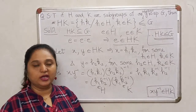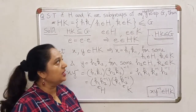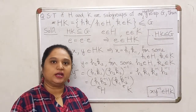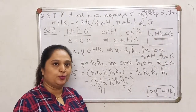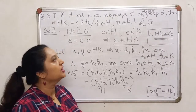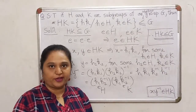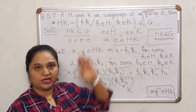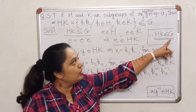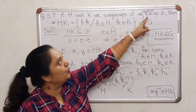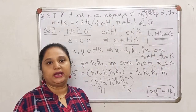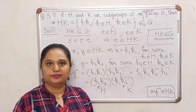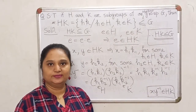So in this lecture today, we have seen two interesting ways of constructing new subgroups from existing subgroups. We saw that if H and K are two subgroups, then H ∩ K becomes a subgroup, and HK also becomes a subgroup provided the group is abelian. That will be all for now. Thank you, see you next time.